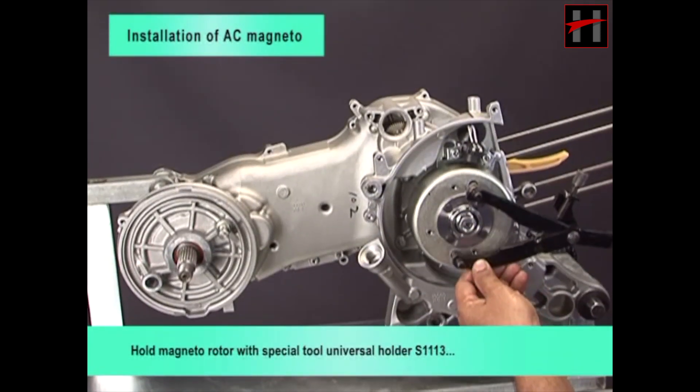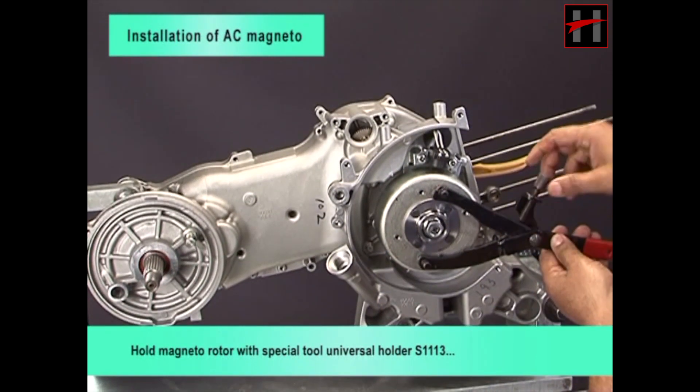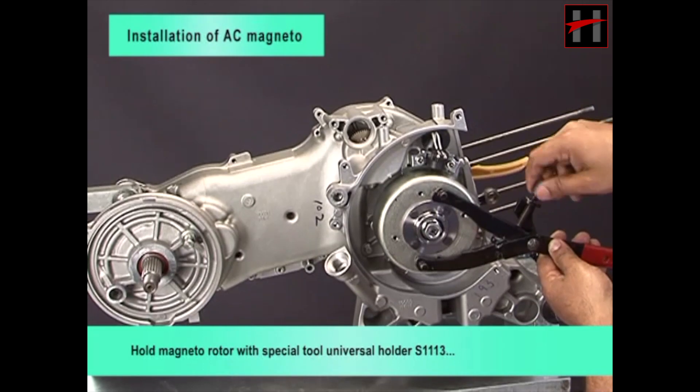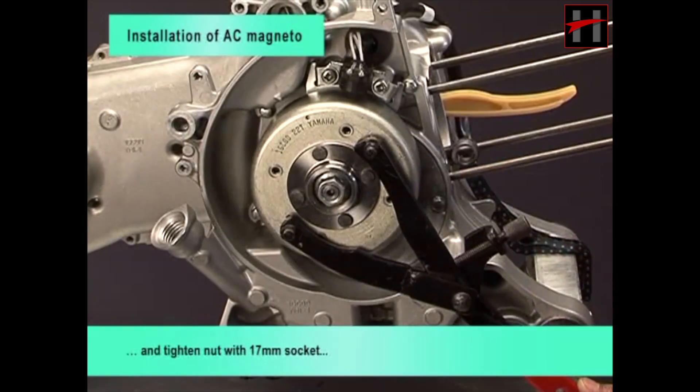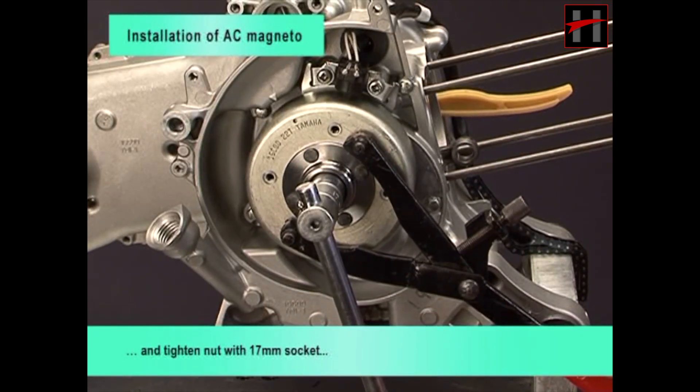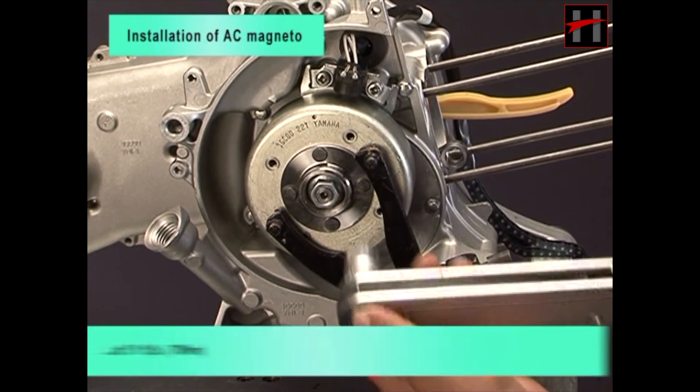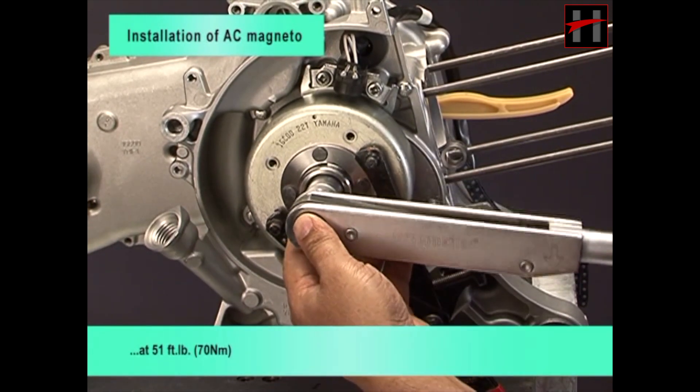Hold magneto rotor with special tool universal holder S1113 and tighten nut with 17 mm socket at 51 ft-lbs.